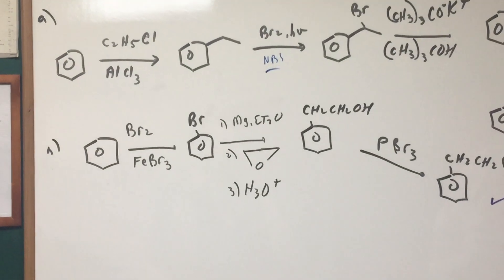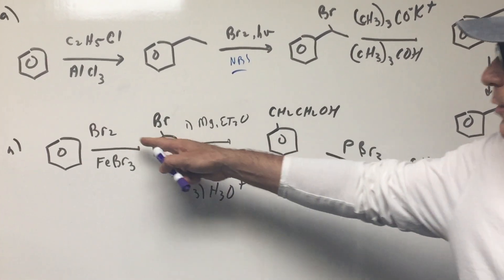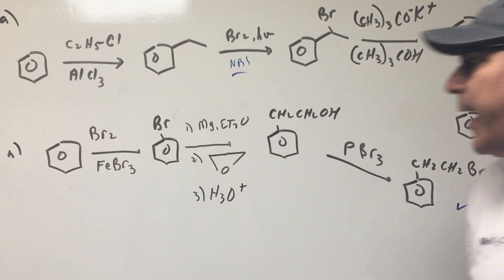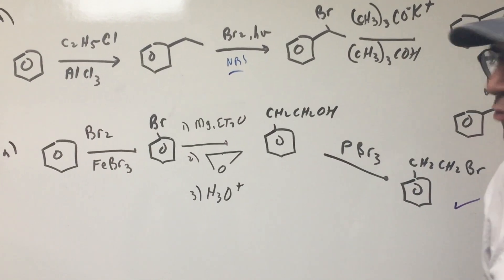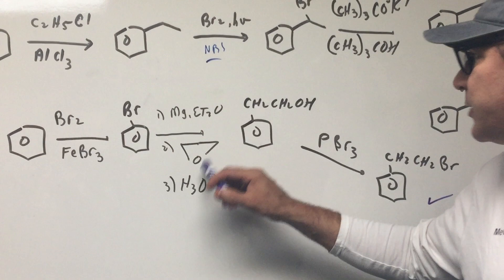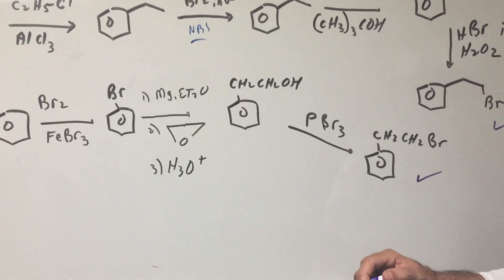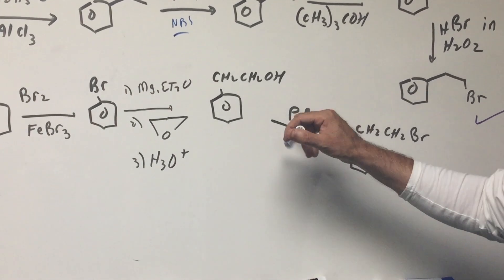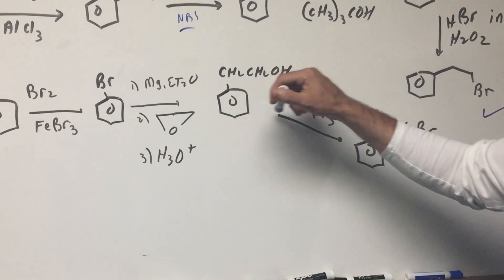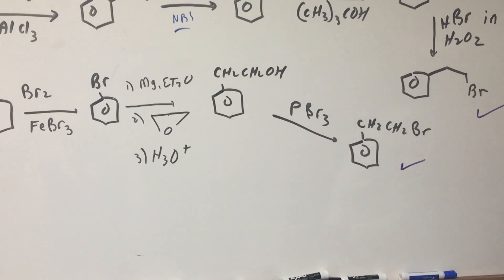Another way you could have done it, which I think is an even quicker way: You could have first halogenated it with bromine and the Lewis acid catalyst of FeBr3. Make a Grignard. Treat it with the epoxide. Acidify it. And that gives me the CH2CH2OH unit. And then I'm going to hit it with PBr3. That'll replace the OH with the Br and that'll give me my target.